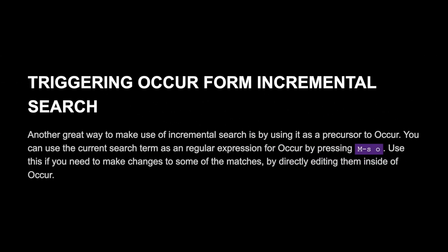Triggering occur from incremental search. Another great way to make use of incremental search is by using it as a precursor to occur. You can use the current search term as a regular expression for occur by pressing Meta-S O. Use this if you need to make changes to some of the matches by directly editing them inside of occur.